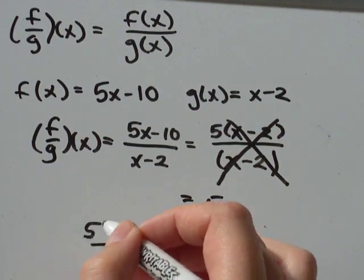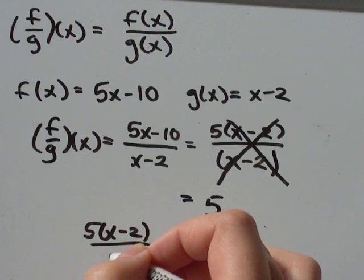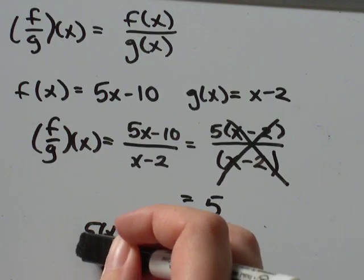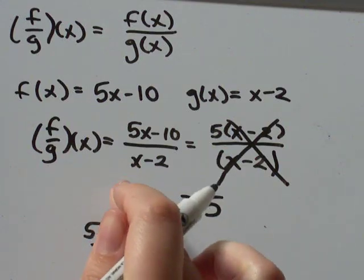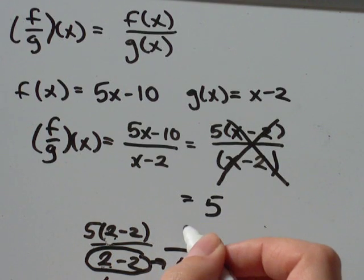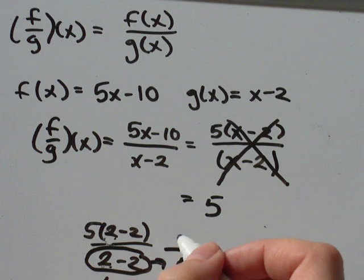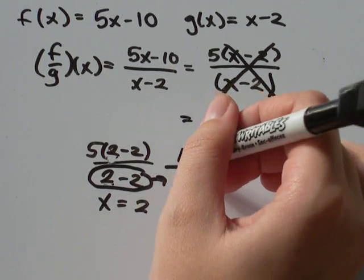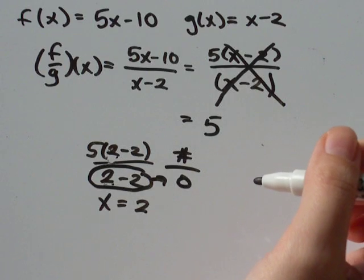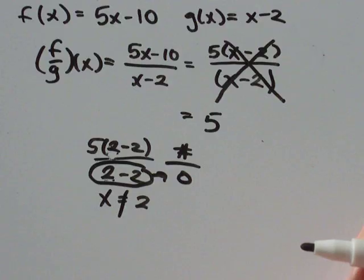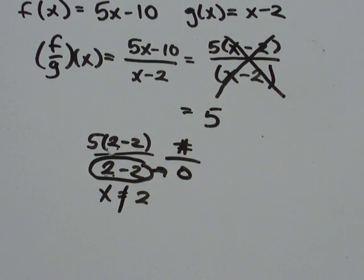So just one little thing to mention. If x was 2, then I would have something that looks like that. 2 minus 2 is just 0. Anything divided by 0 is undefined. So if I have some number divided by 0, it's undefined. So we need to add a little qualification that x can't equal 2, or else we won't have a real answer.